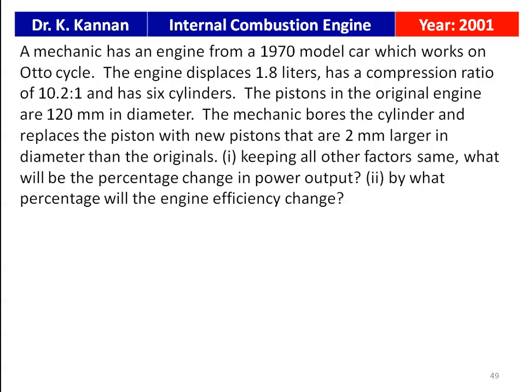The next question is from the 2001 question paper. A mechanic has an engine from a 1970 model car which works on the Otto cycle — it is a petrol engine. The engine displaces 1.8 liters, has a compression ratio of 10.2:1 and has 6 cylinders. The pistons in the original engine are 120 millimeters in diameter. The mechanic bores the cylinders and replaces the pistons with new pistons that are 2 mm larger in diameter than the originals.